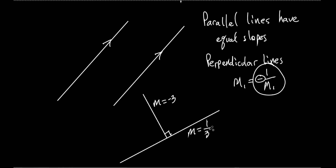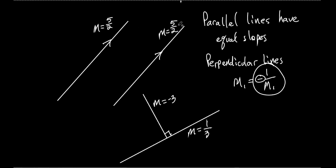What you have to figure out is whether lines are perpendicular or parallel. For example: if the slope of this line is positive 5 over 2, what's the slope of a parallel line? It's also 5 over 2 — same slope. So if they're parallel, they've got the same slope. If they're perpendicular, the slopes are negative reciprocals of each other.